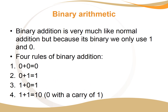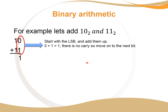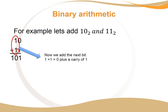Let's take an example: 10 in binary added to 11 in binary. We write them down normally, then start by adding the least significant bits. Zero plus one equals one, no carry, so we move on. The next bits are one and one: one plus one is zero with a carry of one, giving us 101.